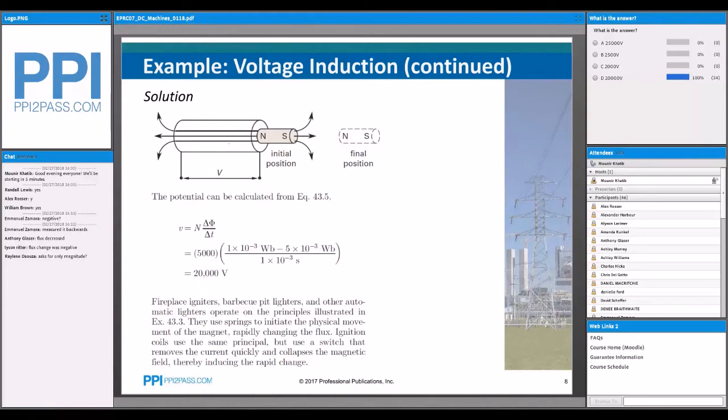Exactly. Really, when you can't tell what direction it's in, all they can ask you for is the magnitude, and that's quite common. Don't let that throw you off. Apparently, this is actually how fireplace igniters, barbecue pit lighters, and other automatic lighters operate, as shown in this Figure 43.3. They use springs to initiate the physical movement of the magnet, rapidly changing the flux. Ignition coils use the same principle but use a switch that erodes the current quickly and collapses the magnetic field, thereby inducing the rapid change. So that's kind of cool.